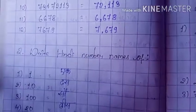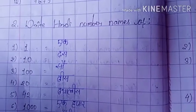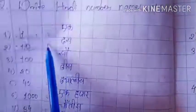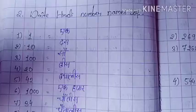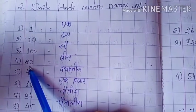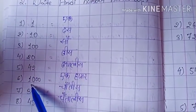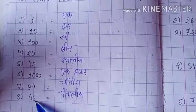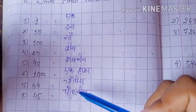Now see the next question — Question number 2: Write Hindi number names of the given digits. How do we write 1 in Hindi? Then 10, then 100, fourth number 20, then 42, 1000, 8000, 34, and 45. Write these in Hindi like this. Write in your notes copy and send me on my personal WhatsApp.